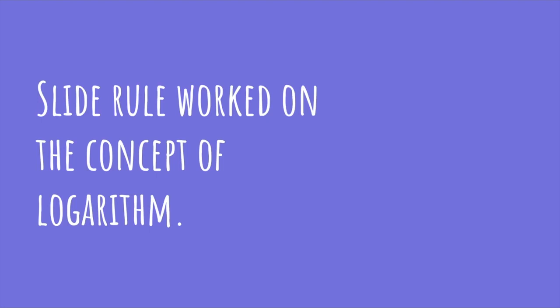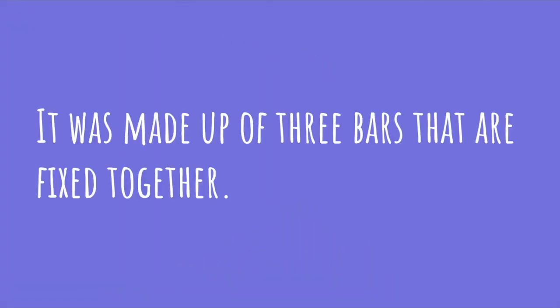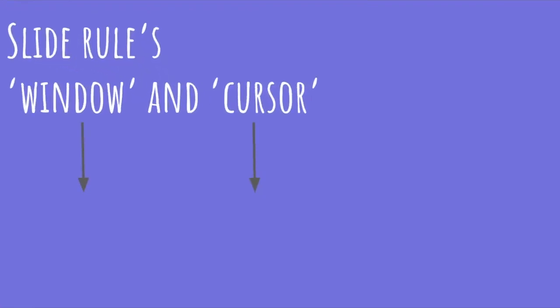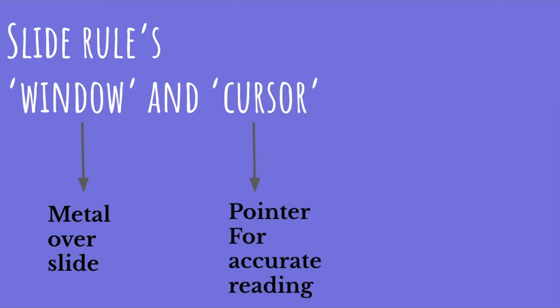Slide rule worked on the concept of logarithm. It was made up of three bars that are fixed together. We saw that they were made up of three bars. Let's discuss about the window and cursor in the slide rule. Window is a metal that is over a slide which can be moved and cursor is a pointer for reading.